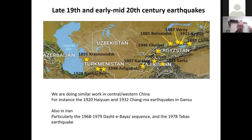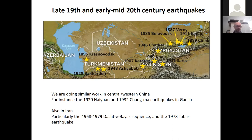We're also reinvestigating early instrumental earthquakes of China — the 1920 Haiyuan earthquake, recently published by Qiu et al. in Journal of Geophysical Research — and the Changma earthquake in Gansu. In Iran, we continue to look at the sequence of earthquakes in Dasht-e Bayaz from the 1960s and 70s, and the Tabas earthquake of 1978.